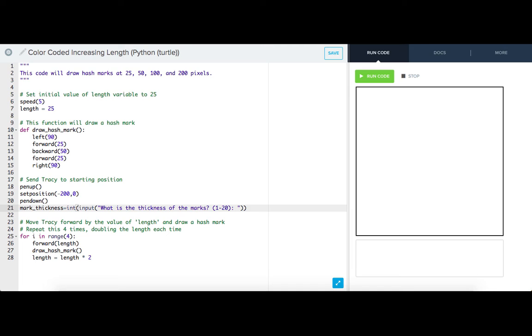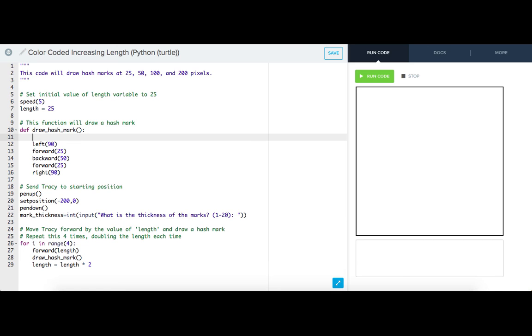I edit in a range of numbers so the user knows what I'm expecting. I also added in a space before my last quotation mark. This is so that a space will exist between my text prompt and the user's answer. We want to use this thickness value to control the pen size of the hash marks in my function. So I'll write pen size mark_thickness.